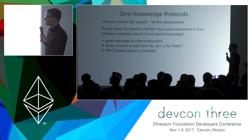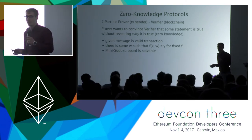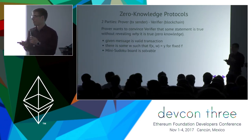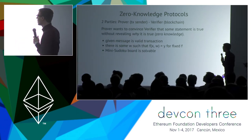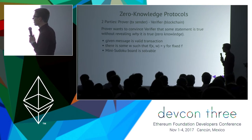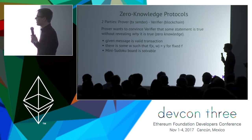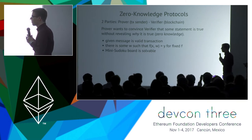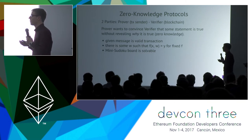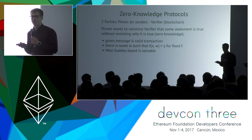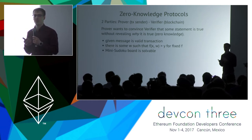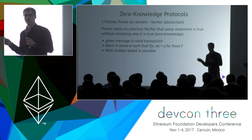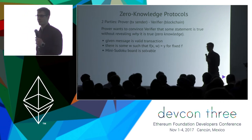In interactive protocols, you always have two parties: the prover and the verifier. The prover wants to convince the verifier about a certain fact. This protocol has the property of zero knowledge if the prover can convince the verifier that the fact is true, but without revealing any detail about why it is true.